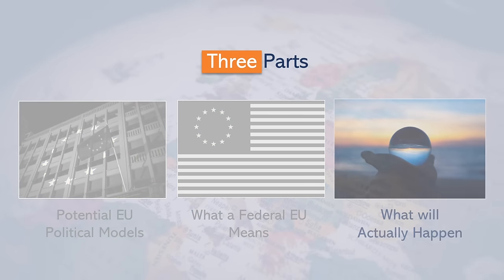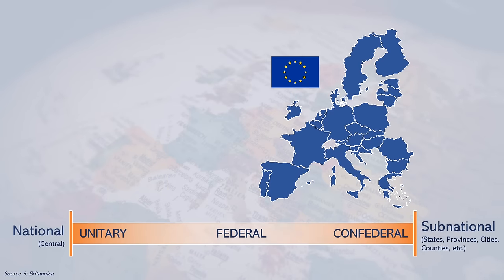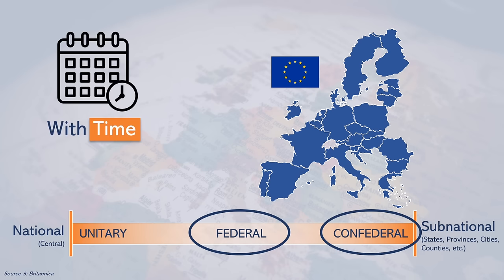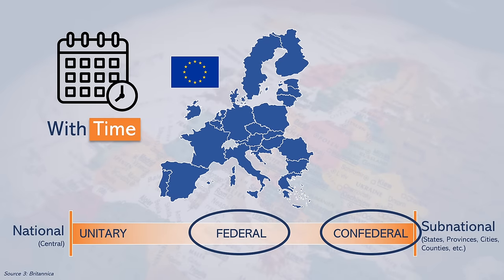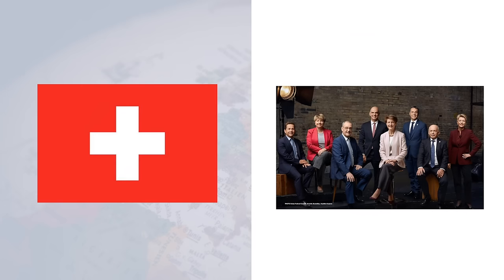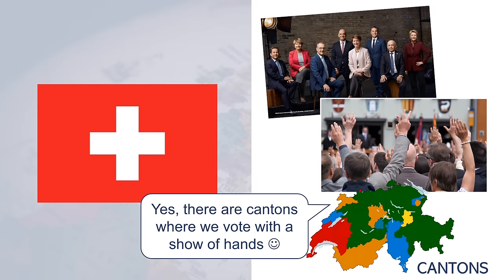How likely is it for the EU to move towards a federal model? The EU is currently closer to a confederation than a federation, but history has shown that a confederation often results in the establishment of a federation. Take Switzerland and the US — both started as a confederation but ended up becoming federal unions. The Swiss model is particularly interesting, as it has seven heads of state, a direct democracy where citizens vote directly on specific issues, and subnational states called cantons that have a lot of power.